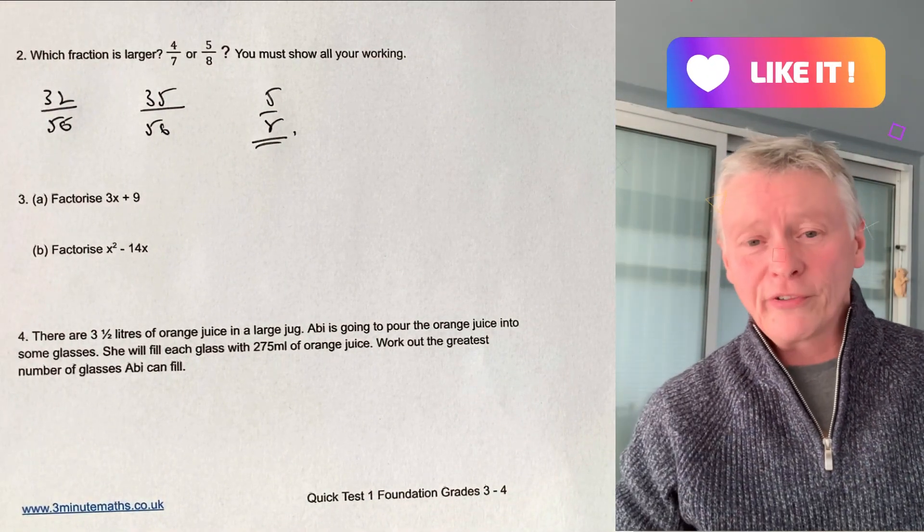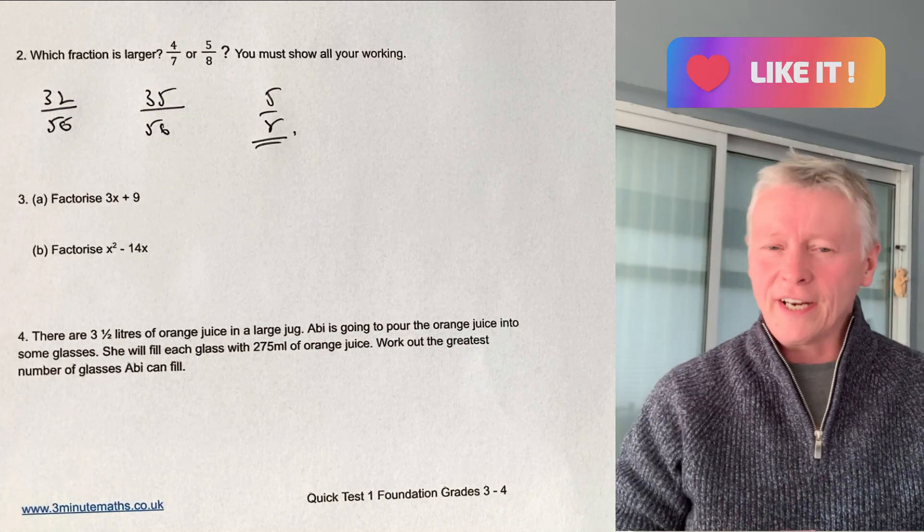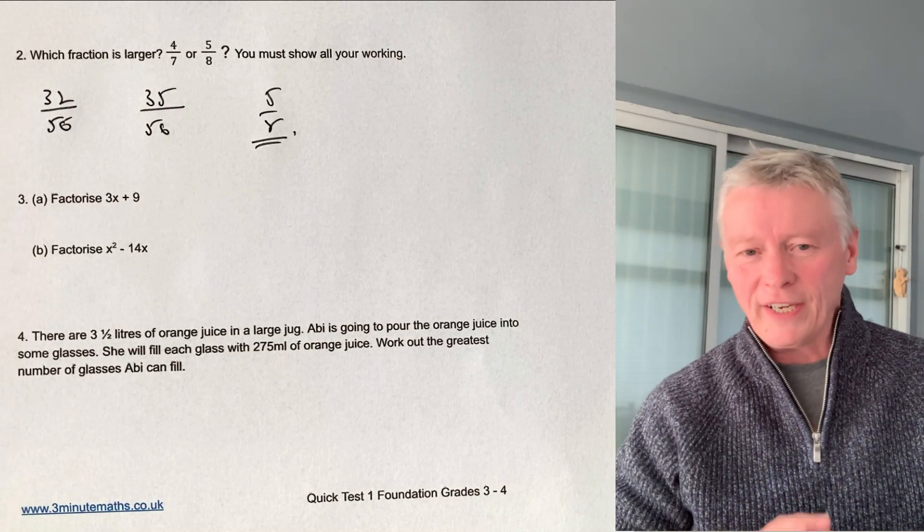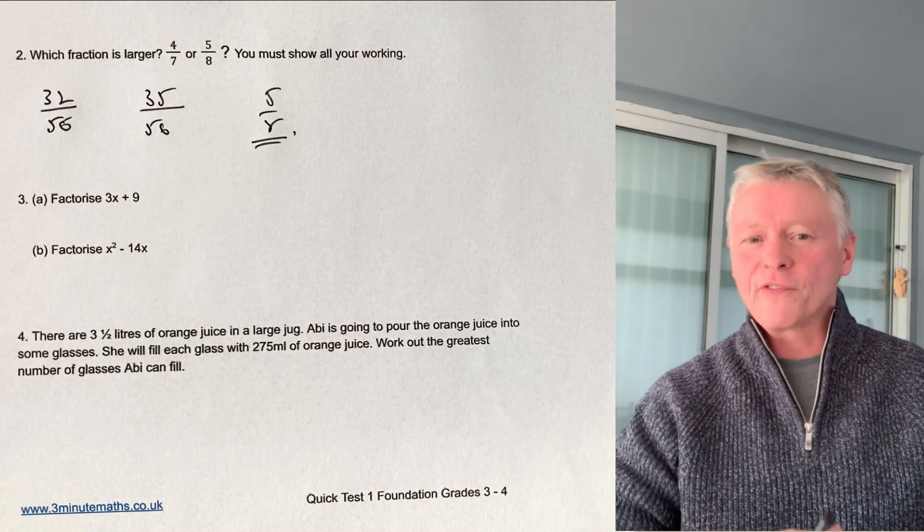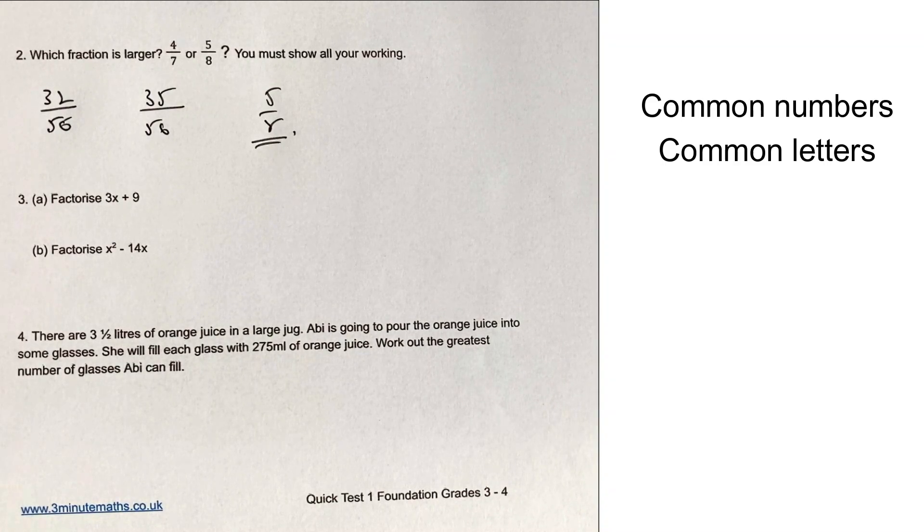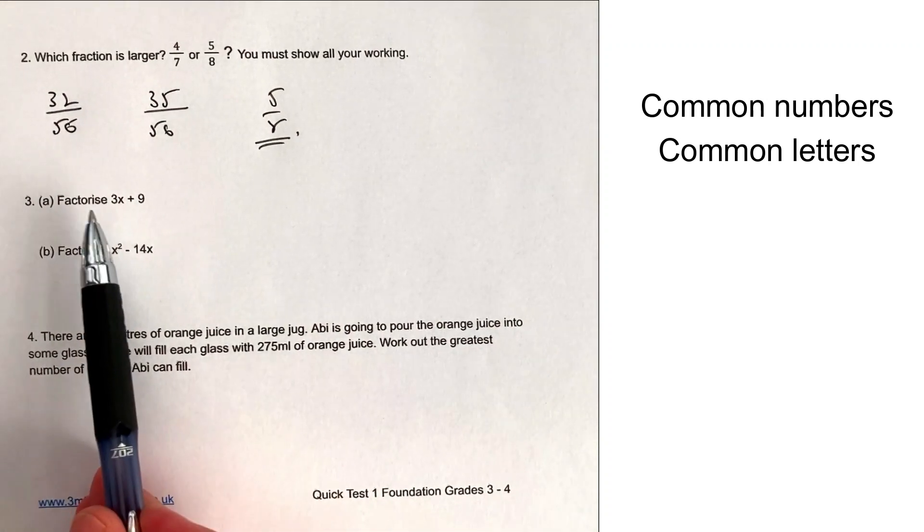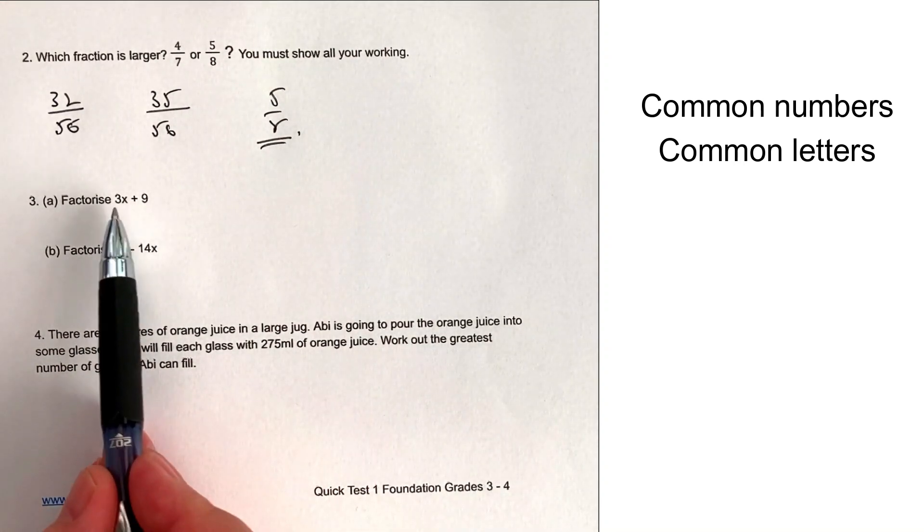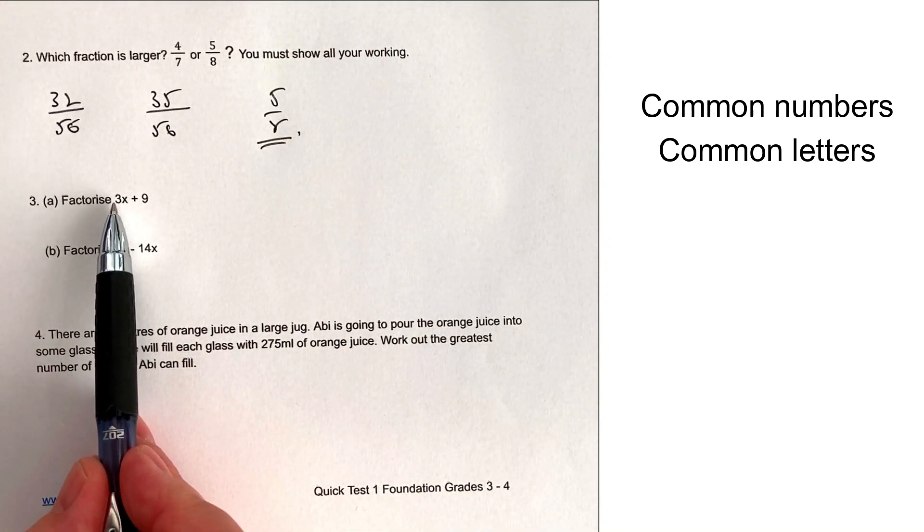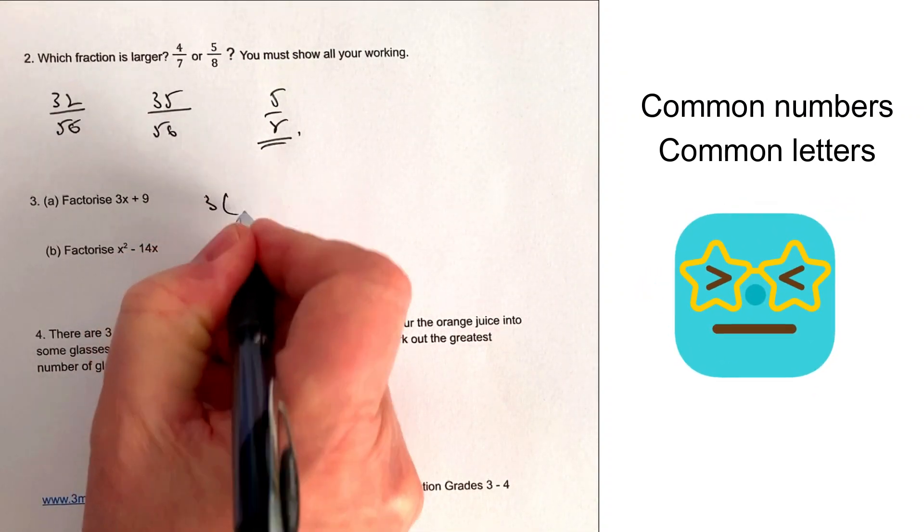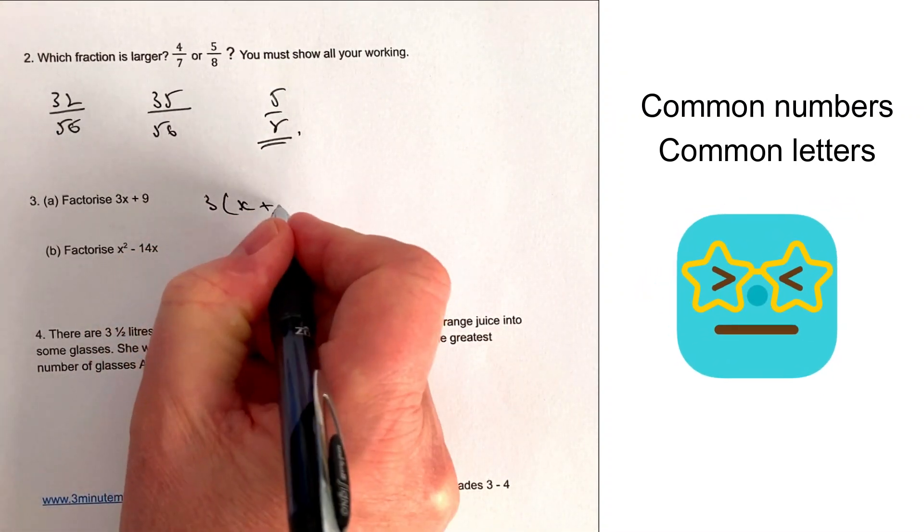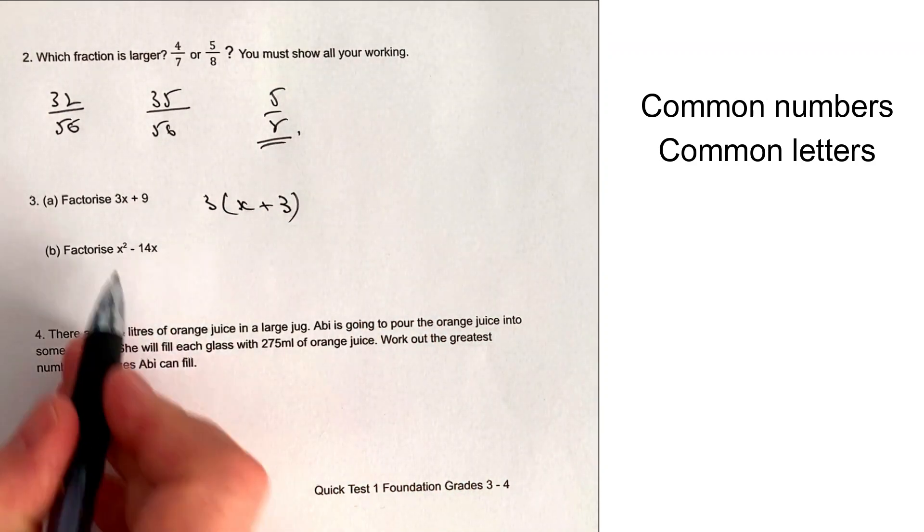Likewise, in question number 3, it's all about factorising. Again, very popular. I've tried to pick out the most popular type of questions you're going to get in foundation papers for non-calculator. So let's have a look at this one then. In question number 3, we're looking to factorise 3x plus 9. Well, if we look at the numbers first, the biggest number will divide into 3 and into 9 is actually going to be 3, and there are no common letters, so it's going to be 3 brackets x plus 3.